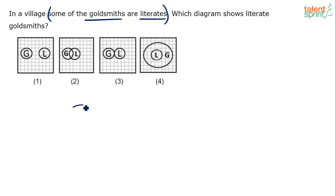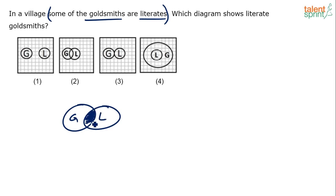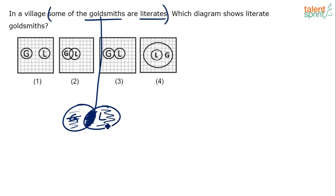How do you represent 'some goldsmiths are literates'? The common overlapping region between the two circles represents those goldsmiths which are literates. Those outside the overlap are only goldsmiths and not literates, while those in the other section are literates which are not goldsmiths.